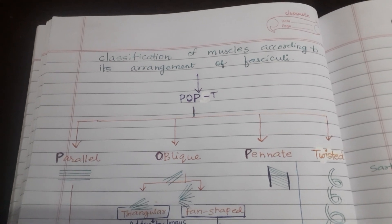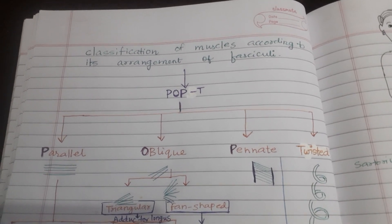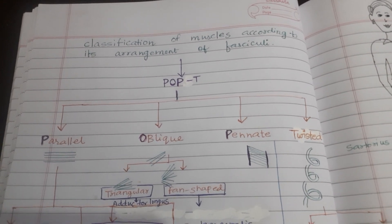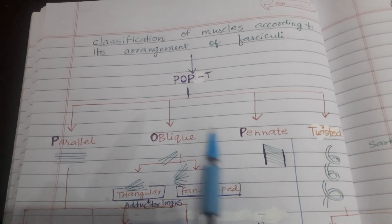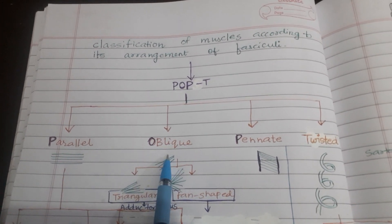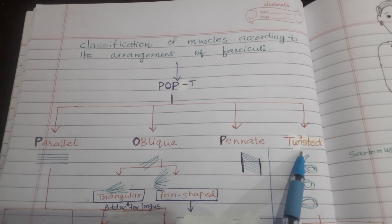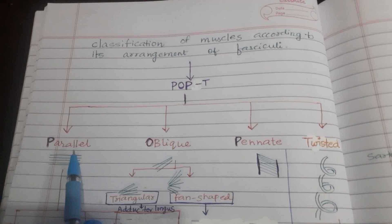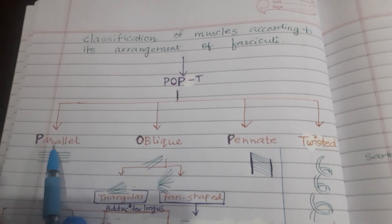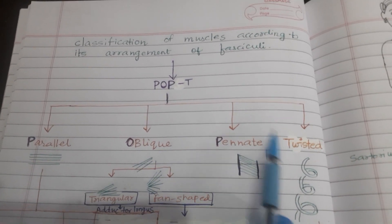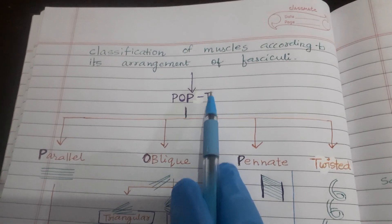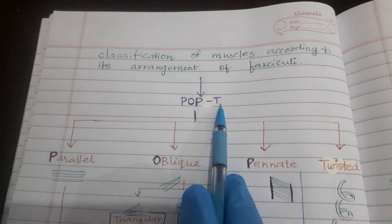Today we will study classification of muscles according to the arrangement of fasciculi. There are four types: parallel, oblique, pinnate, and twisted. The initials of every type are P, O, P, and T — POPT. The T is a beverage which gives us energy, so POPT.